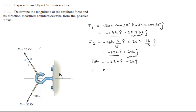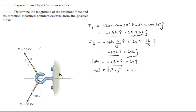To calculate the magnitude, you take the square root of the x-component squared plus the y-component squared, and it comes out to be 25.07k.